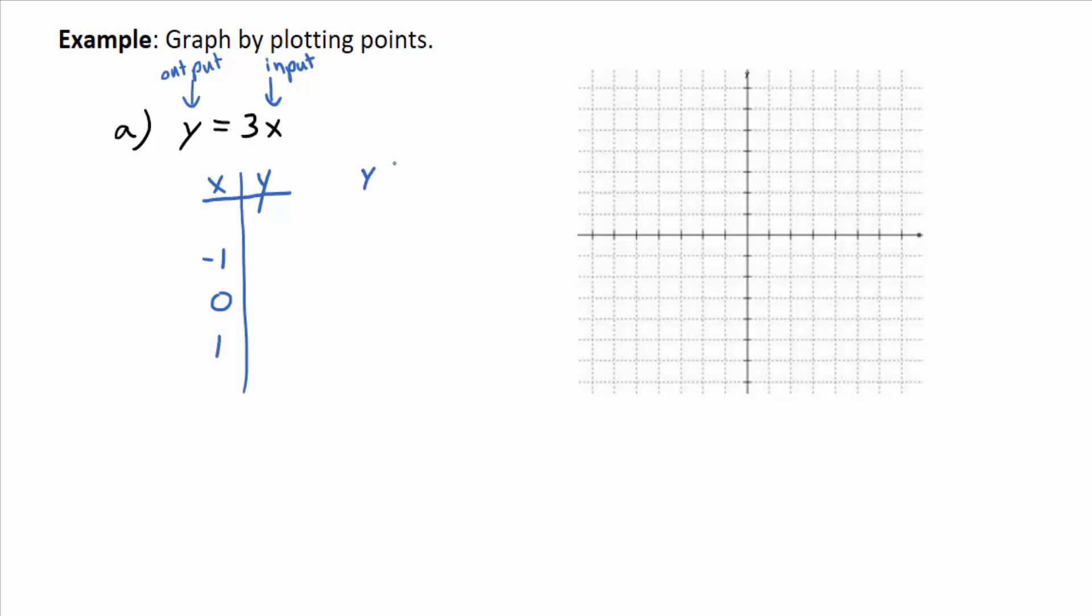So you have y equals 3x as your equation. When you plug in negative 1, what do you get for the y value? 3 times negative 1 is negative 3. What do you get when you plug in 0? What do you get when you plug in 1 for x? 3. You actually only need two points to plot a line, but it's nice to plot 3 as kind of a check to make sure they all lie in line. If one of them doesn't look like it's in line with the other two, then you know you did something wrong.